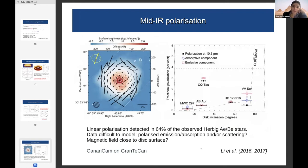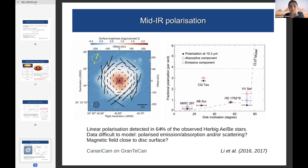Mid-infrared polarization has also been observed with CanariCam on the Gran Telescopio Canarias. For the Herbig Ae/Be star AB Aurigae, polarization in the outer region is much larger than in the inner regions. A sample of 10–20 Herbig Ae/Be stars was observed; about 60% show linear polarization. The topic is complicated because polarized emission, absorption, or scattering could all contribute — the question is whether a magnetic field close to the disc surface is responsible. Observations by Li in 2016 and 2017.